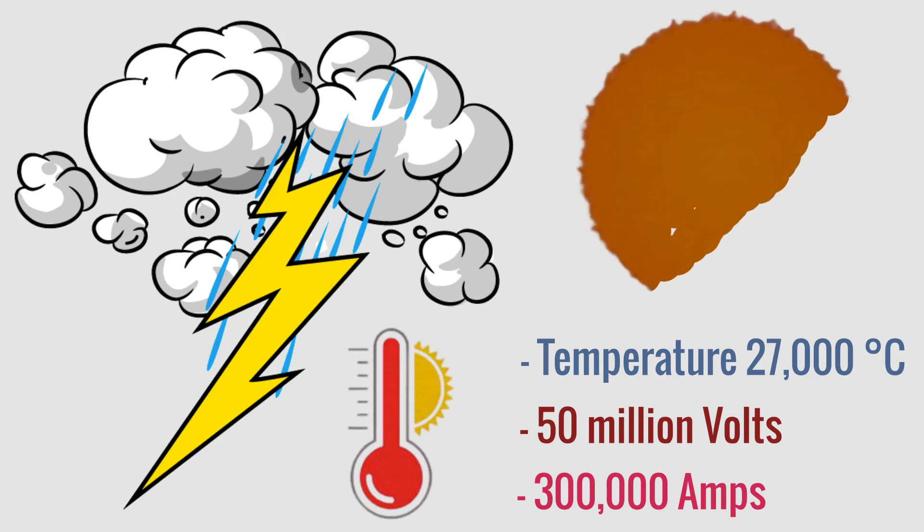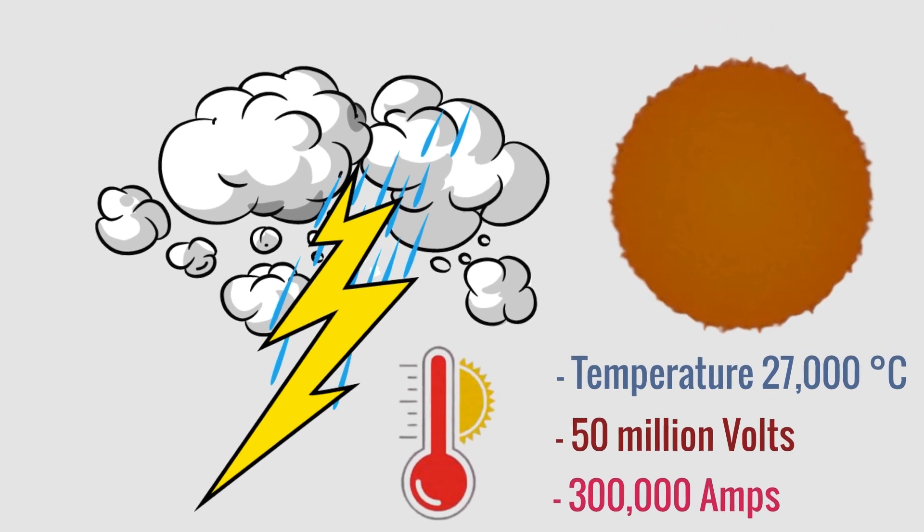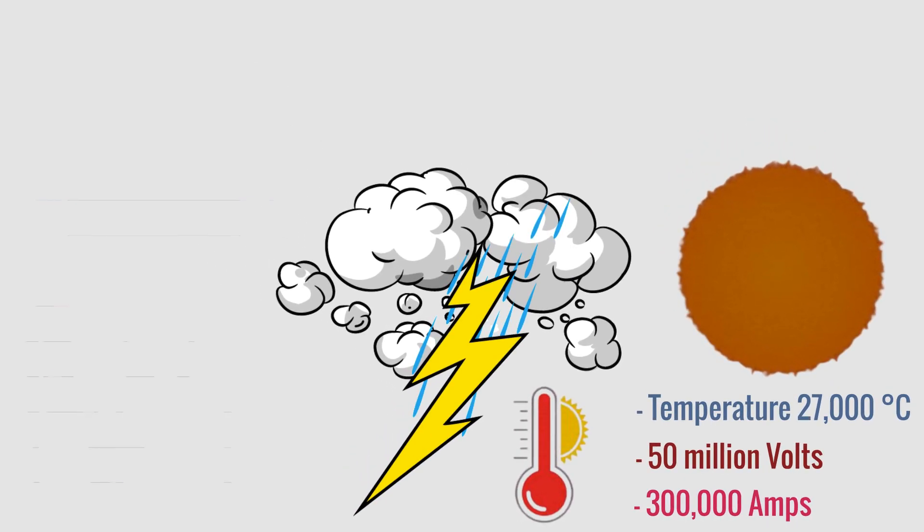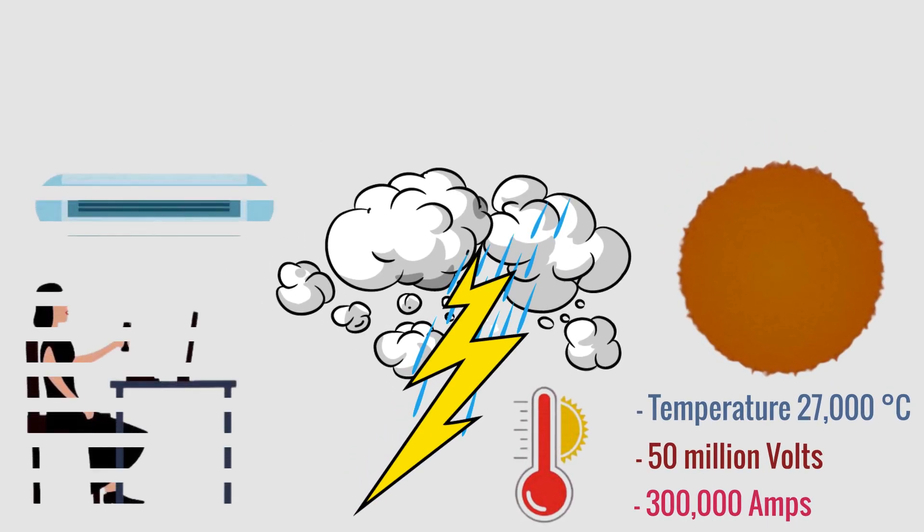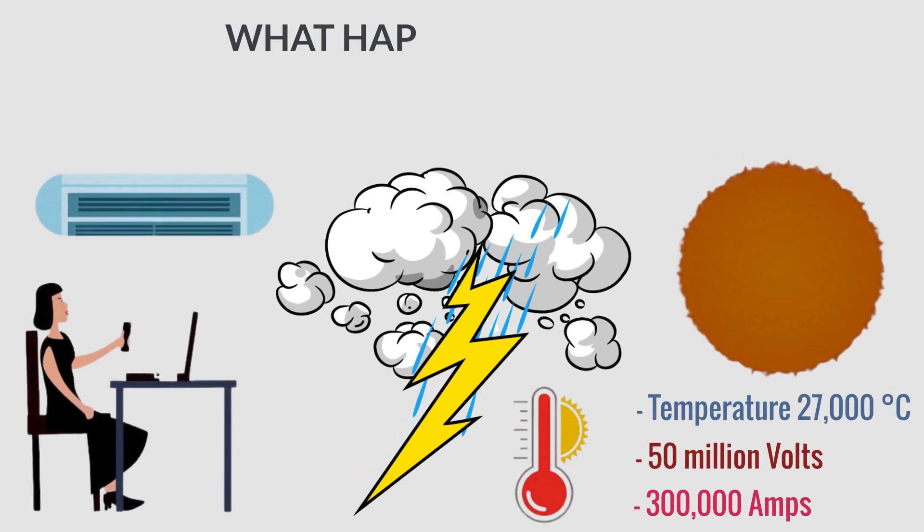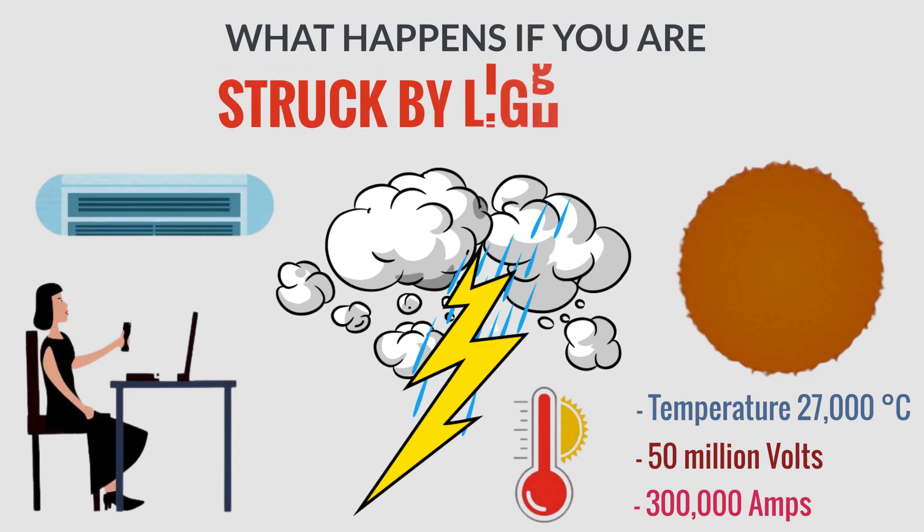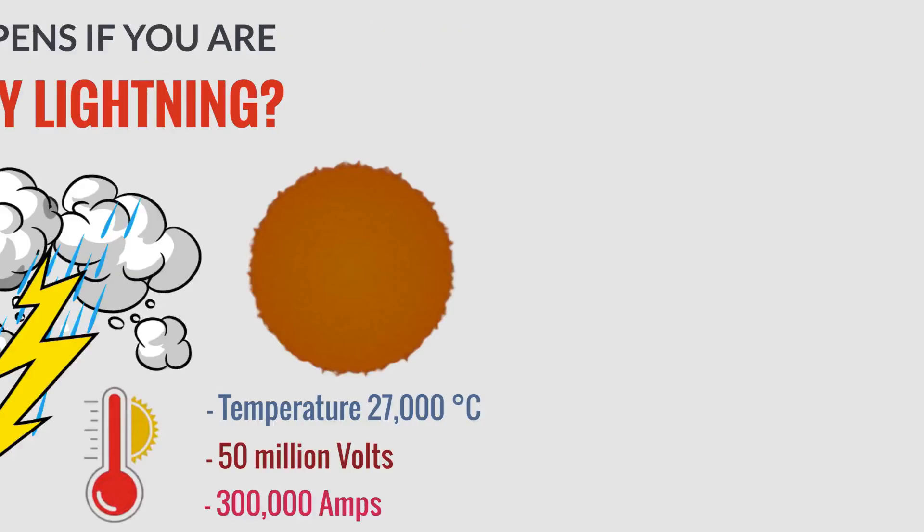Although it only lasts for about a tenth of a second, lightning can carry billions of joules of energy, enough to run an air conditioner continuously for half a month. So what happens if you are struck by lightning? Can you survive or not? Let's find out together in this video.